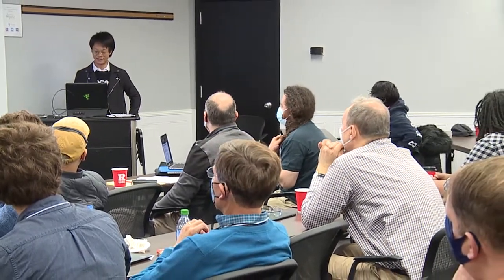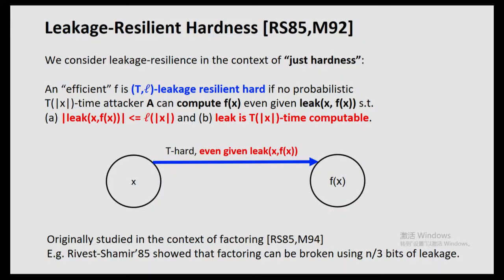So the message here is: factoring with n^epsilon bit leakage — we believe it's hard. It's state-of-the-art for decades, so it's very reasonable to believe that.